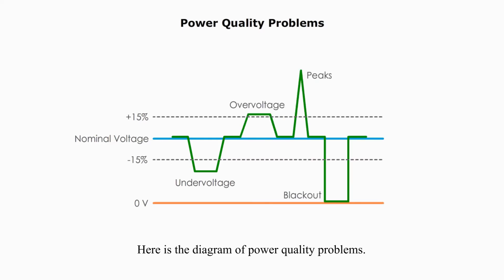Here is the diagram of power quality problems. Power quality can be defined as a clean supply voltage that stays within the prescribed range in a smooth curved waveform.